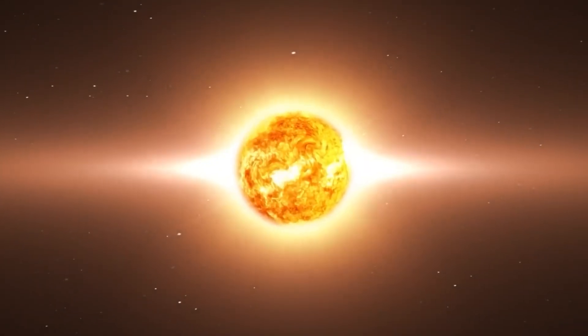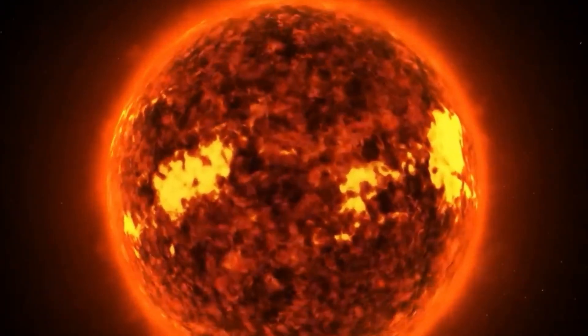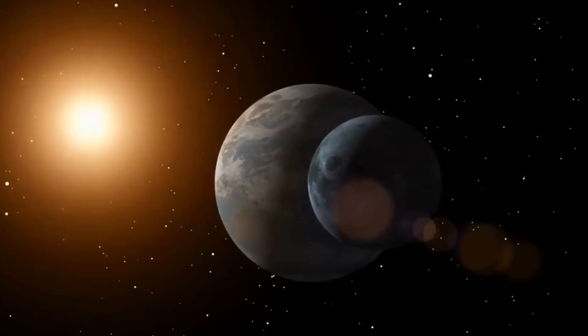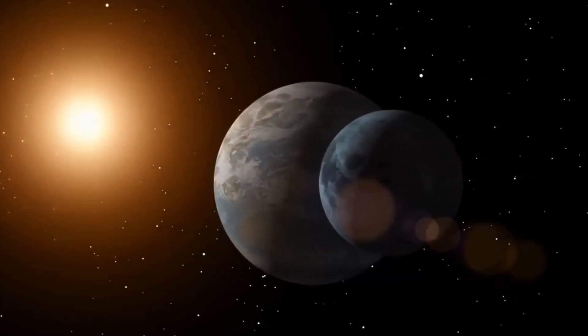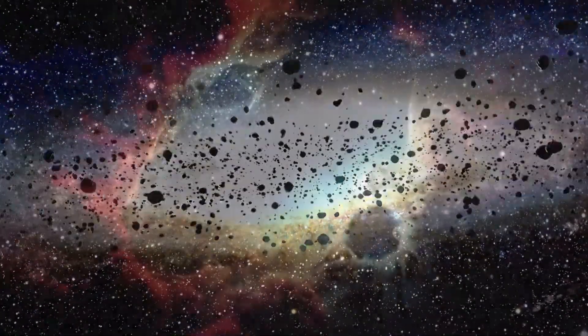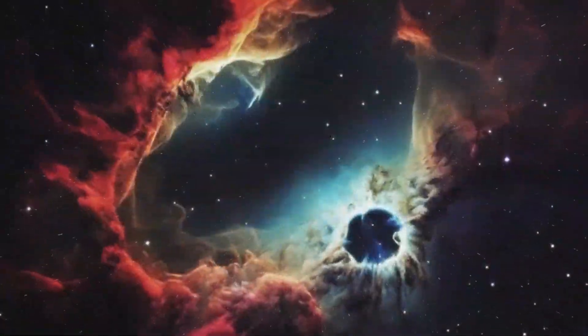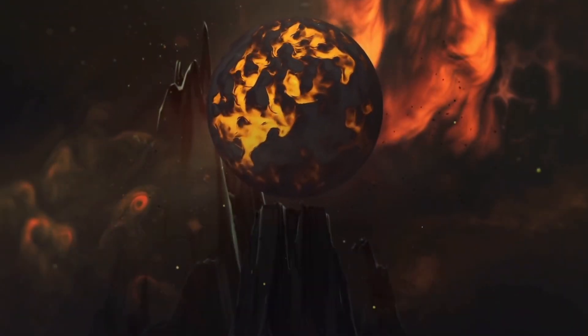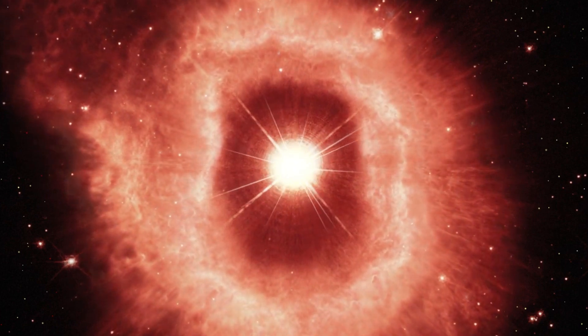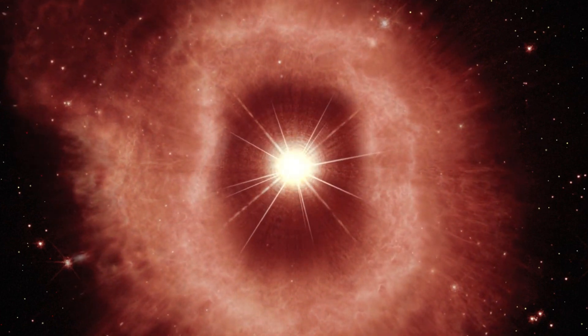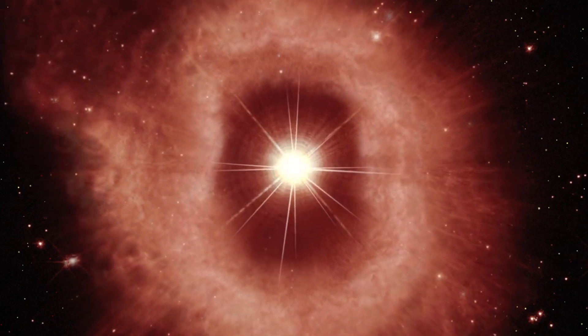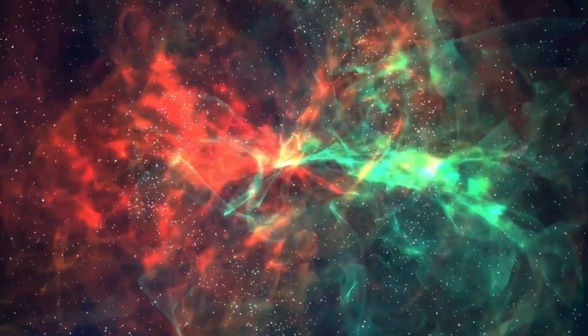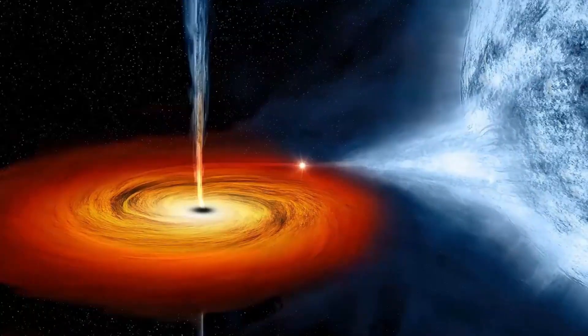Betelgeuse's potential supernova remains a topic of speculation as the star approaches the end of its lifespan. Notably, Betelgeuse exhibits two distinct cycles of dimming and brightening, with the second cycle lasting approximately 100 days and occurring every five years. This phenomenon is believed to be caused by the expansion and contraction of the star's outer shell, resulting in changes in its diameter and average temperature. In recent years, particularly in 2019 and 2020, there has been significant interest in Betelgeuse's unusual dimming followed by a brief return to normal brightness.